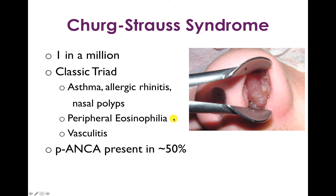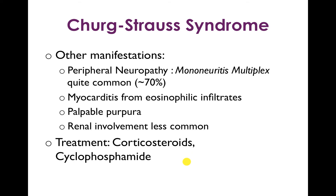Patients with Churg-Strauss syndrome typically have peripheral eosinophilia, suggesting a strong allergic component in the pathogenesis, and there's also vasculitis involved. P-ANCA positivity is present in about 50% of patients. In addition to the predominant asthma symptoms, other manifestations include mononeuritis multiplex, seen in about 70% of patients.